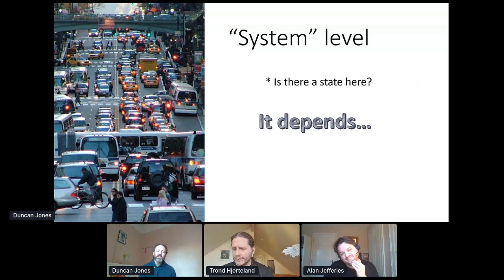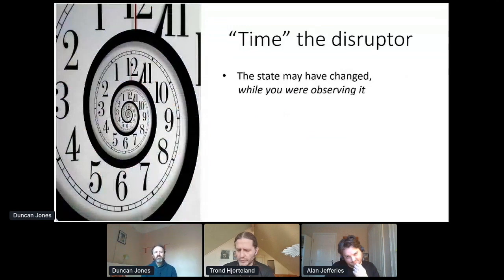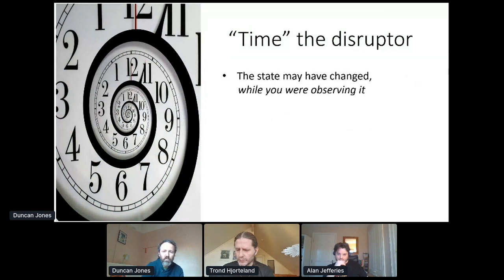It feels like there should be a state, but it also feels like there shouldn't be a state. So what's going on? Why is that the case? The reason it depends is because of time. Time is a very disruptive part of our distributed system. And the reason it's disruptive is the state of your things may have changed while you're observing it. Let me drill down into a couple of ways that that happens.